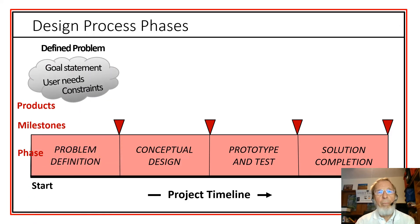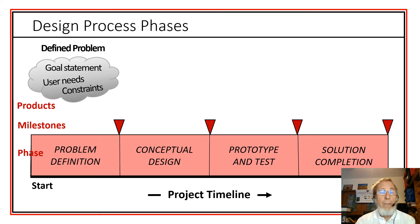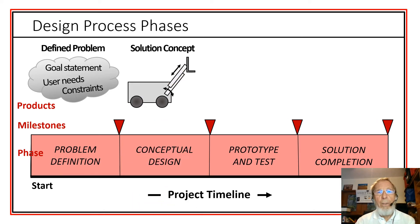The product from our problem definition is a well-defined problem. That includes a goal statement, the list of needs the user has identified, and possibly some limitations or constraints that tell us we have to stay within certain bounds. Once we define the problem, we move into the conceptual design stage where we create a vision or a model or an idea of what the solution will look like — what are its components, how would they work together, what must they do in order to meet the need?